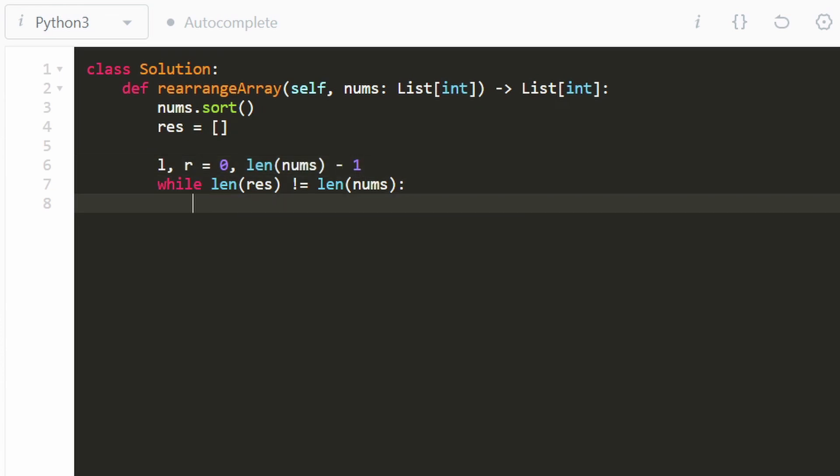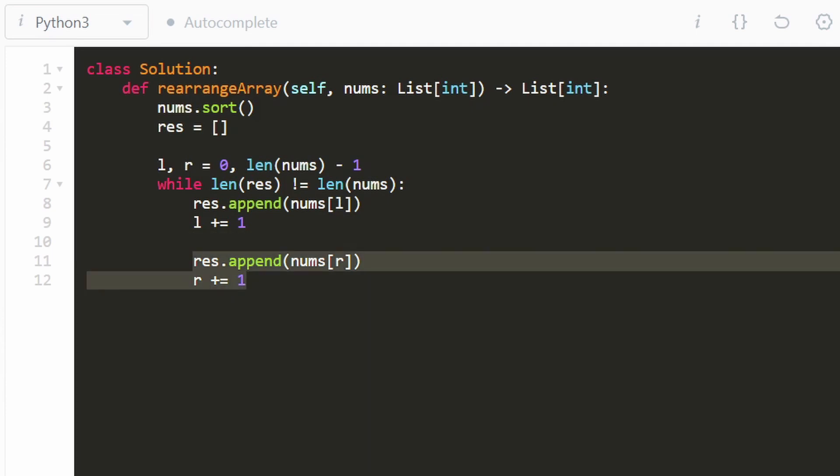So first, we'll take a value from the left side. So we'll say result dot append nums of left, and then we'll increment that left pointer. And then we'll do the exact same thing with the right side. So result dot append nums of right and right plus one. But actually, it could be possible that we have an odd number of total elements.